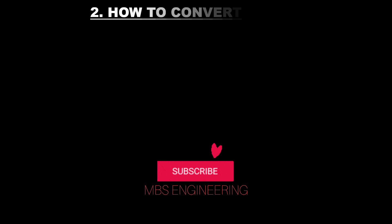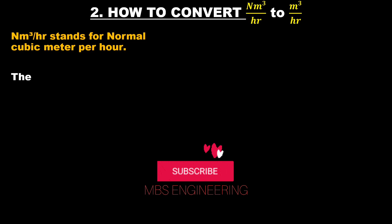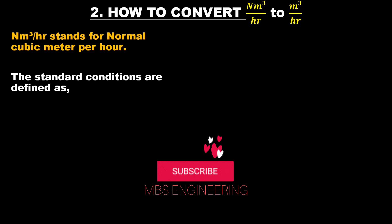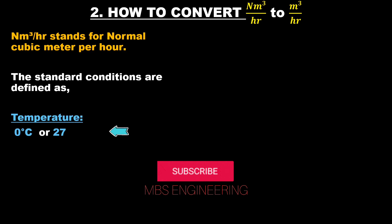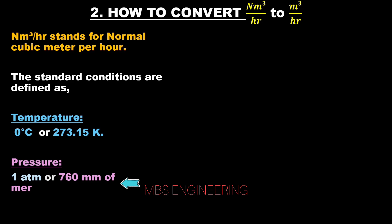We will learn how to convert normal meter cube per hour to meter cube per hour. Nm³/hr stands for normal cubic meter per hour. The standard conditions are defined as a temperature of 0 degrees Celsius or 273.15 Kelvin, and a pressure of 1 atmospheric pressure or 760 millimeters of mercury.